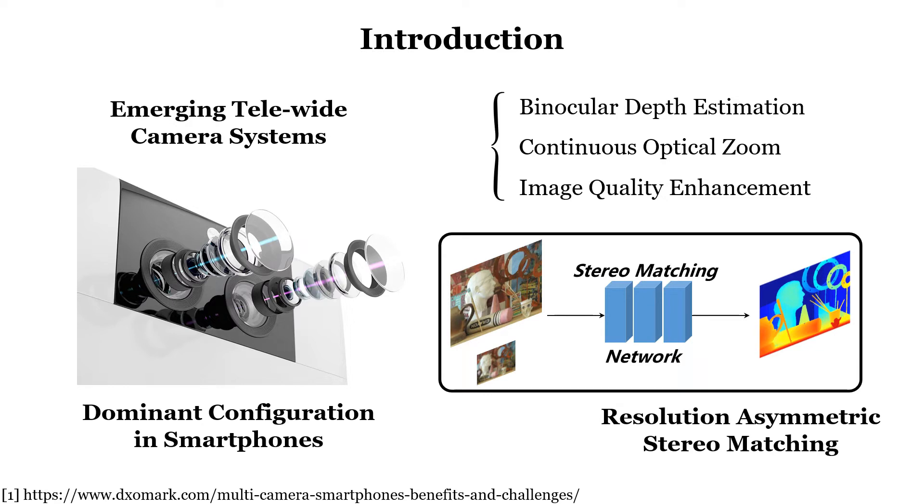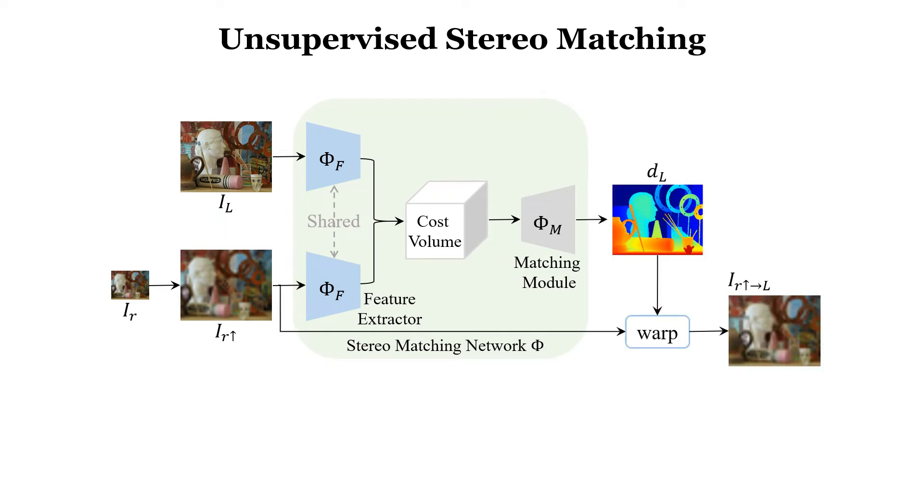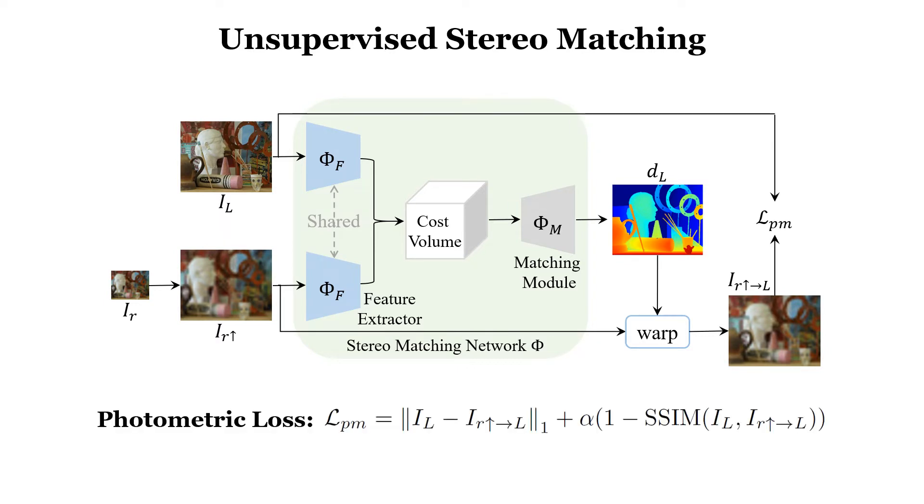Due to the difficulty of obtaining ground-truth disparity labels in diverse real-world systems, we start from an unsupervised learning perspective. In unsupervised learning, given two views, a stereo-matching network takes them as input and outputs a disparity map. The disparity map is used to warp right view to left. Then, a photometric loss is adopted to train the network.